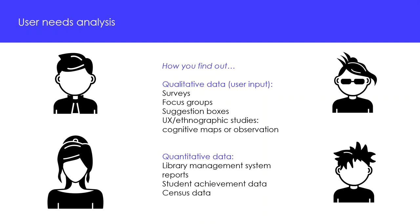Quantitative data is easier to collect. Libraries and schools are very good at collecting data almost as a by-product of daily operations. We have masses of data in our library management systems, including circulation data which tells us about usage of the collection and allows us to track trends in usage over time. Libraries can also track attendance at programs, usage of service points and even the number of people who walk through the doors. In addition, school data such as student achievement, school census data and other sources are also useful to inform what is known about the library's users.